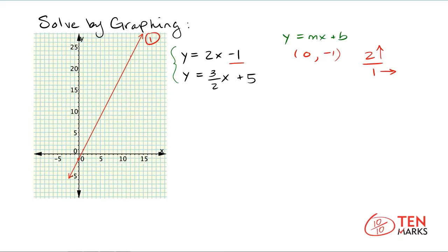The line for equation one is now in red on the coordinate plane. For the second equation, the y-intercept will have a value of positive five, which means it has the coordinates zero, positive five. Let's mark that point. Now look at the slope — you have a slope of three-halves, or three over two, which means you go up three and over two from the y-intercept.